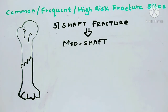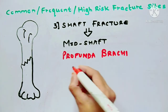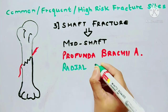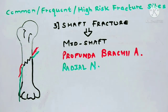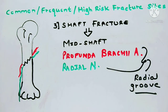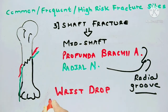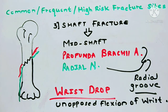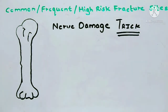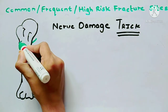Now let's talk about shaft fractures, in which mid-shaft fractures are at highest risk. In such fractures, the profunda brachii artery, shown in red, and the radial nerve, indicated in green, are at high risk of getting damaged as they are tightly bound to each other in the radial groove. The radial nerve innervates the extensors of the wrist, and in the event of damage to this nerve the extensors will be paralyzed, resulting in unopposable flexion of the wrist, which is known as wrist drop.